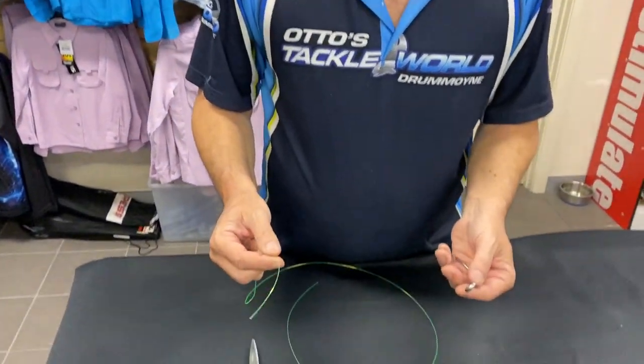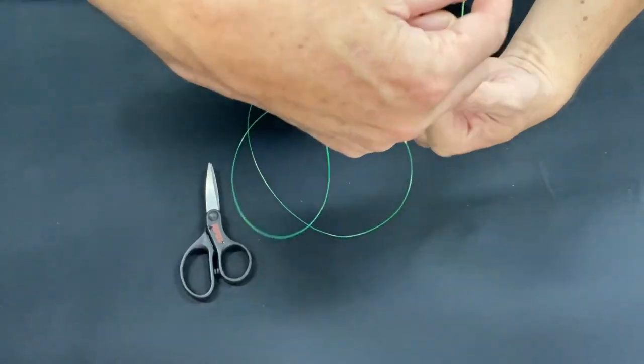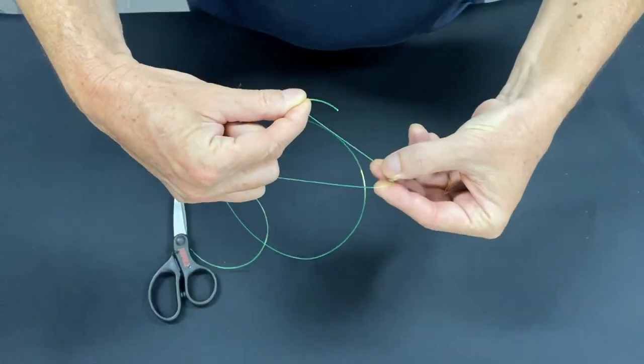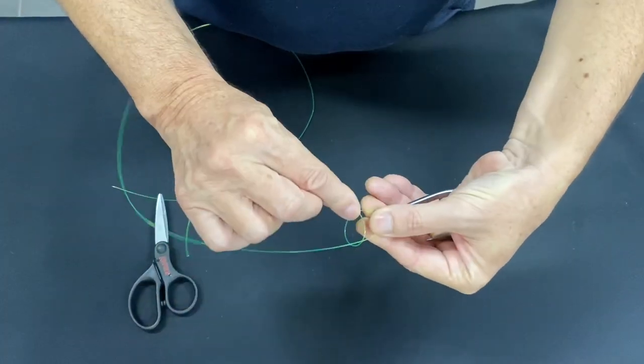Alright, so let's have a look how we do it. I get the tag end, put him through the eye. I like to turn the hook away from me. Pull a bit of line out, don't be shy. So get it here, now I'm going to make a loop.